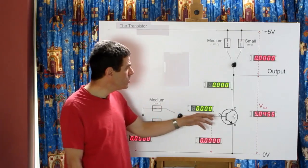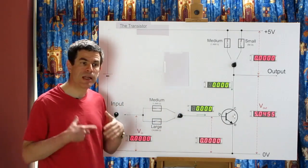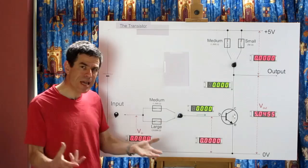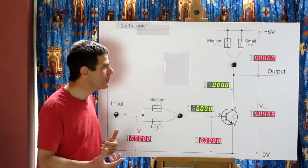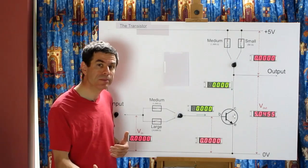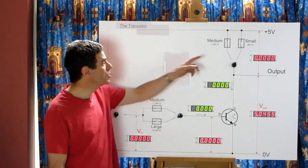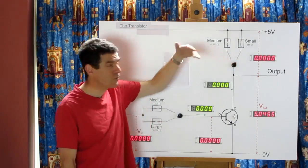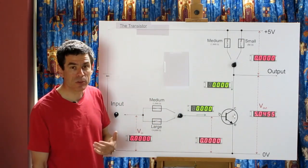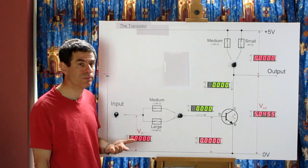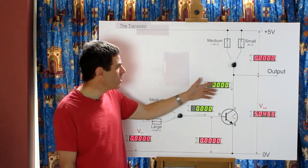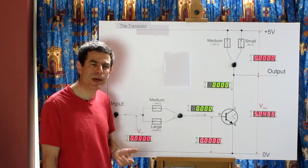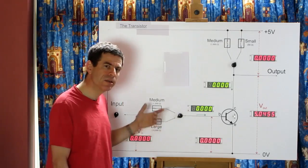The transistor amplifies current but it doesn't create current — it's allowing current to flow, and that current comes from the power supply, which is pushing current through this 50 ohm resistor. With a 5 volt supply, the maximum current the power supply can provide is 100 milliamps. The largest we got to was 90 milliamps, so the power supply limit isn't affecting the behaviour of the circuit. But we can change the configuration.